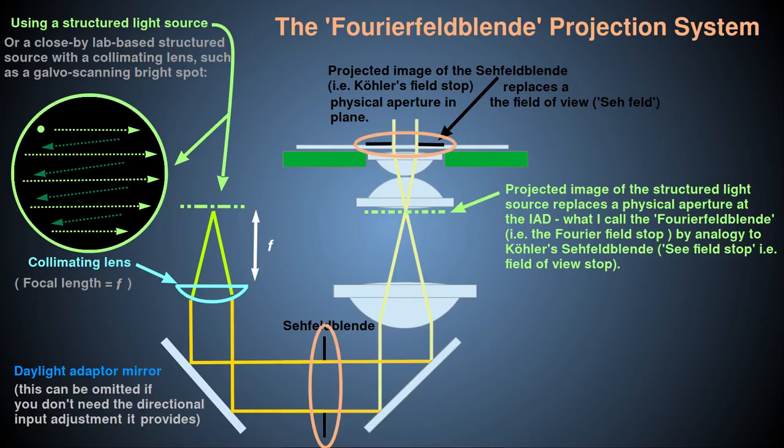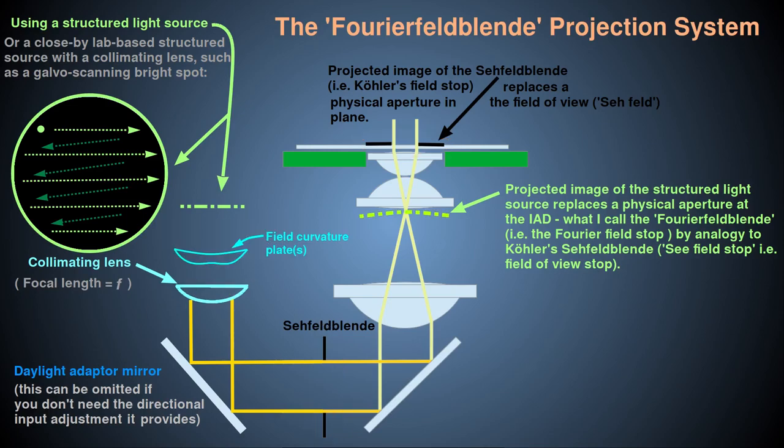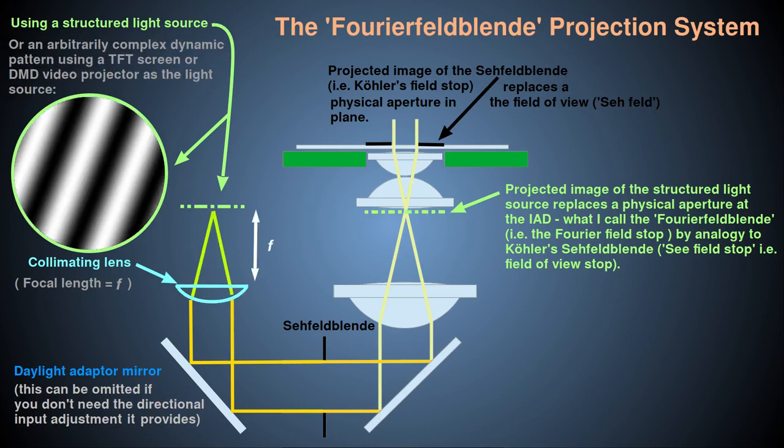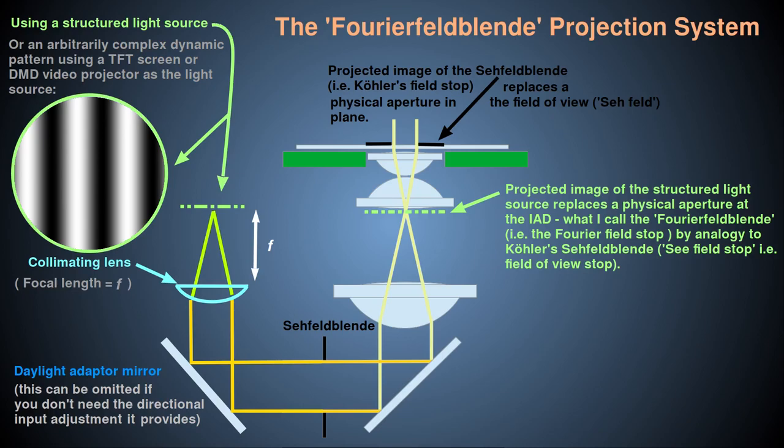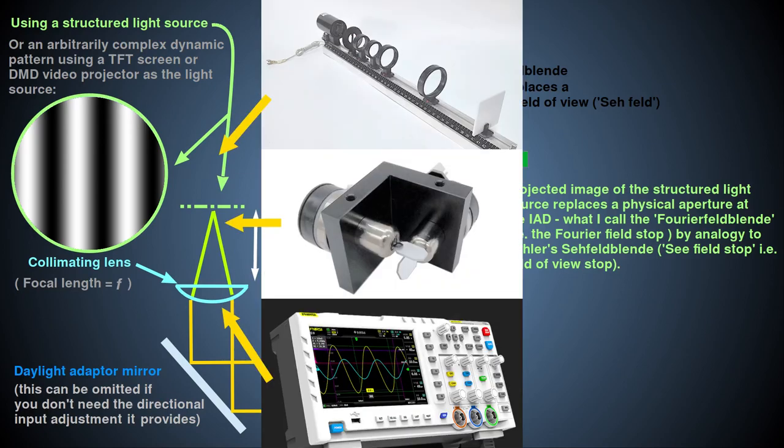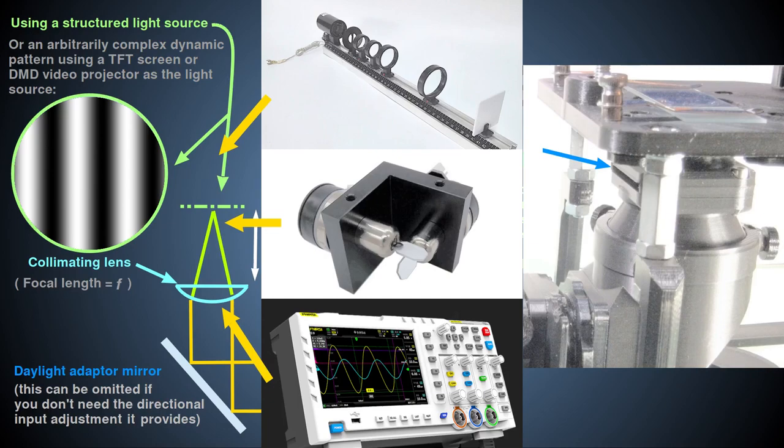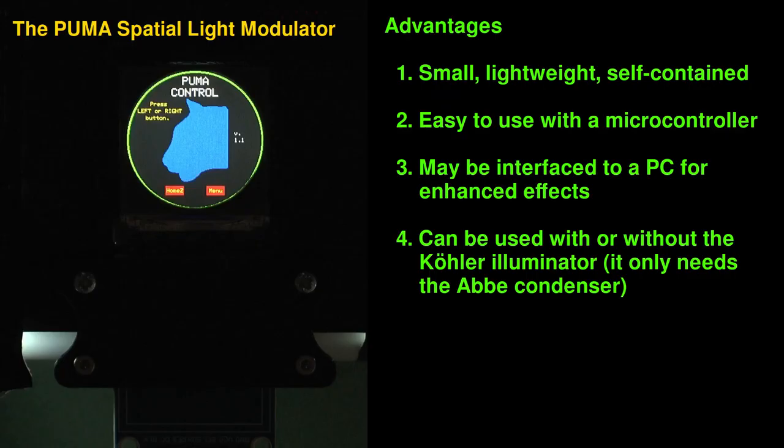Also, the SLM is partly diffusing, so cannot allow a sharp image of the field stop to be projected, but this external system can make full use of the field stop. Furthermore, you can also use corrective lens elements in this external system to compensate for the non-flat Fourier plane of the condenser, whereas the SLM is restricted to providing its filter all in one flat plane. In short, you have much more flexibility in your choice of equipment used to create the structured light aperture in the Fourier plane with this external system compared to the Puma SLM. The external system can be big and bulky and powerful, because it does not have to physically fit into the tiny IAD slot like the Puma SLM. These advantages are not all one way, though. The Puma SLM is a lot more portable than the external projection system and does not require any additional optics and mechanical components.